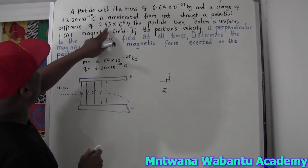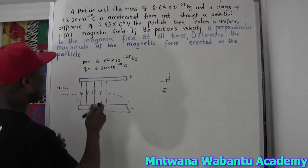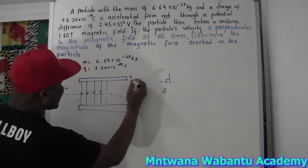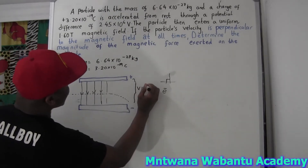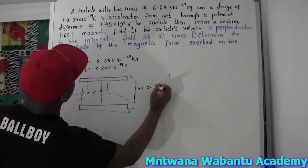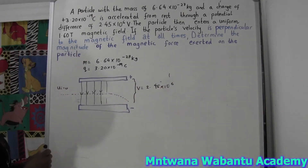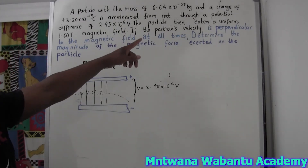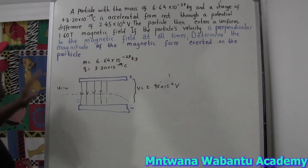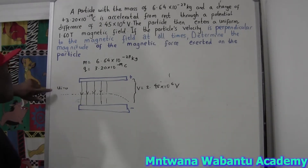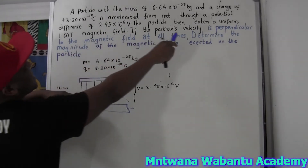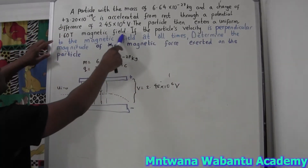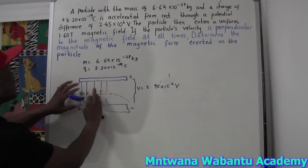So they give us a potential difference — the potential difference between these two plates — which is 2.45 times 10 to the power 6 volts. Now, this particle enters a uniform magnetic field. So this one is a uniform magnetic field.